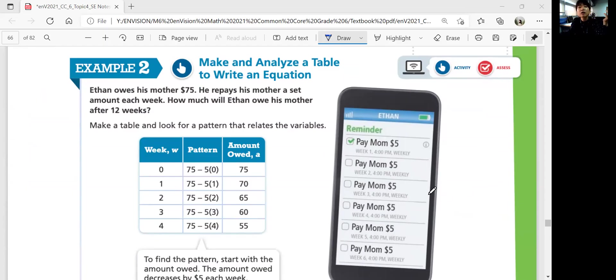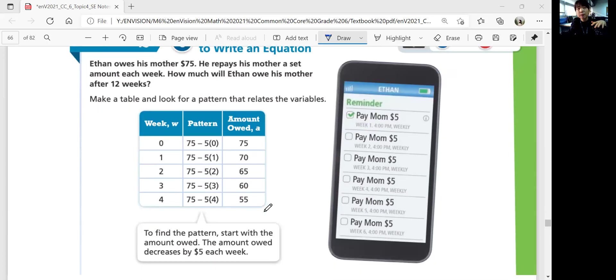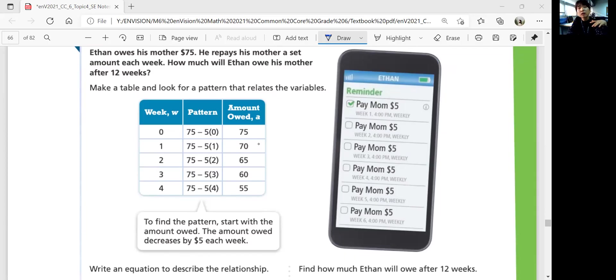So how much will he owe after he paid $5 each week for 12 weeks? So you can make a table to see the pattern. Zero weeks, he owes $75. That's where he starts from. And then after a week, he pays $5, at $70. Two weeks, he pays another $5. And now he owes $65 and so on. So he keeps tracking it. So as the number of weeks is added by 1, the amount owed decreases by 5. So the pattern is from 75, you decrease 5 times your number of weeks. Start with the amount owed, and then it decreases by 5 every week.